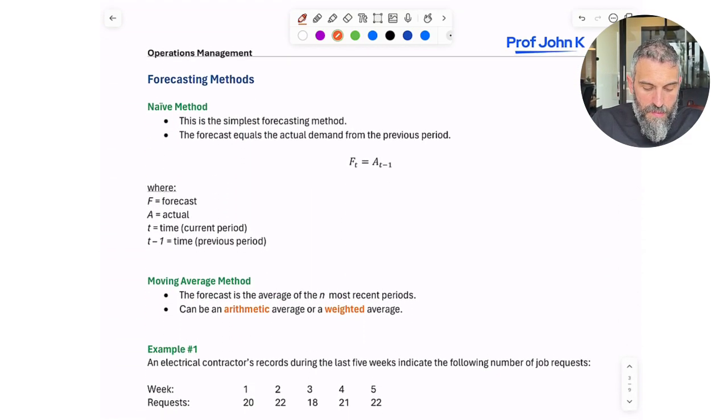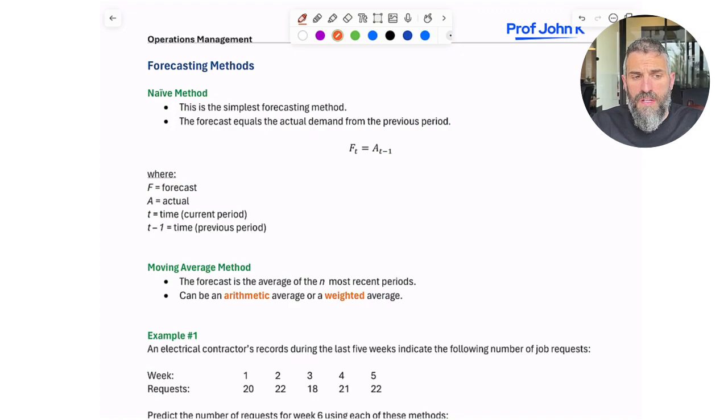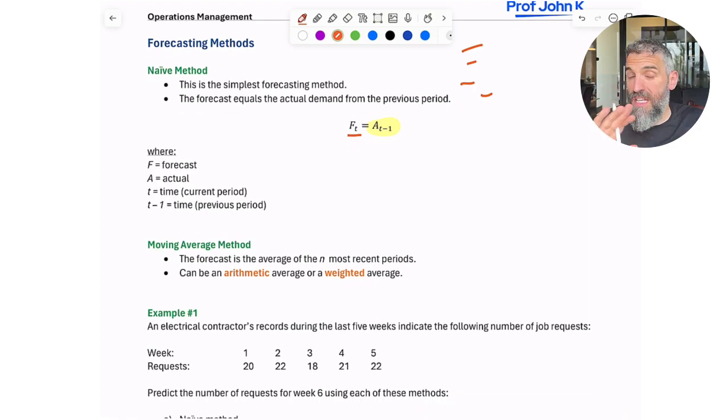Now, we're going to be spending pretty much the entire time on the different forecasting methods. And so let's start with the most basic one. It's called the naive method or the naive approach. The naive approach basically requires no calculation. The naive approach is when you expect your sales will be whatever they were the period before, where the forecast for any given period, and that's what FT means, is the actual demand, A is for actual, T minus one of the previous period.